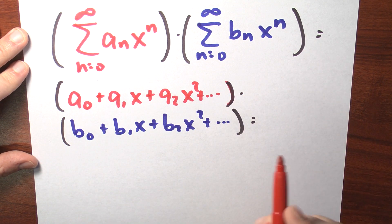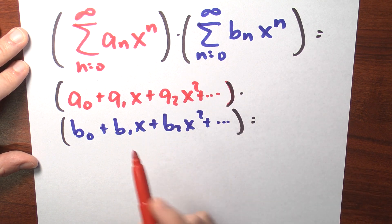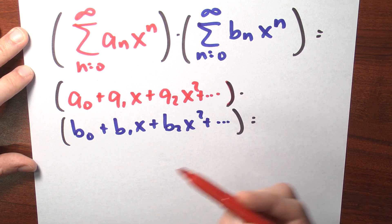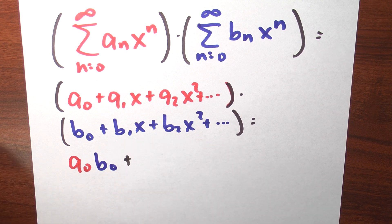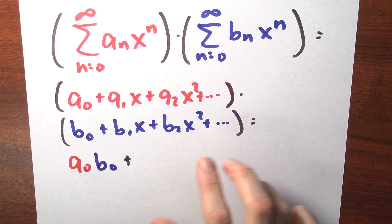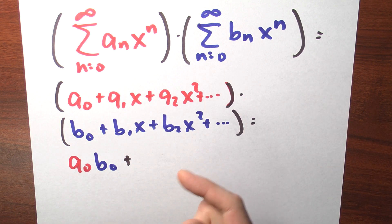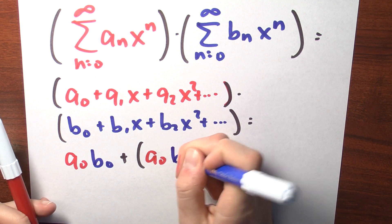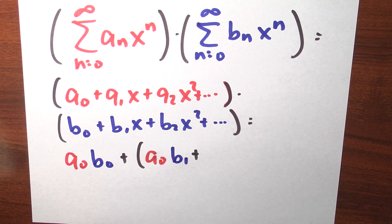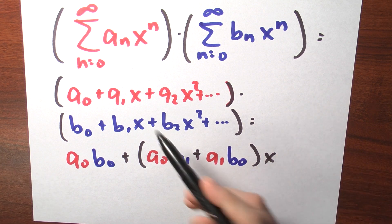I can think about how these terms combine to give me various powers of x. I have to pick something from the first series and multiply it by something from the second. The only way I get a constant term — a term without an x — is when I multiply a sub 0 by b sub 0. Then for the linear term, there are two ways: I could multiply a sub 0 by b sub 1 x, or a sub 1 x by b sub 0. So the coefficient is a sub 0 times b sub 1 plus a sub 1 times b sub 0.